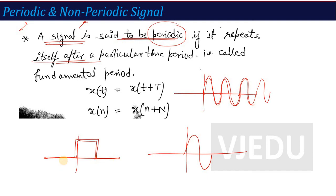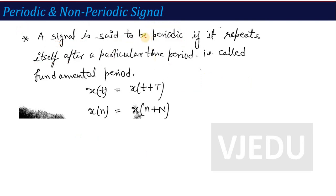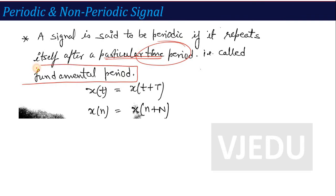This type of signal is called a non-periodic signal. Which signals repeat are called periodic, and which signals do not repeat are called non-periodic. In the case of a periodic signal, if the signal repeats after a particular time interval, we call this particular time interval the fundamental time period of that signal.